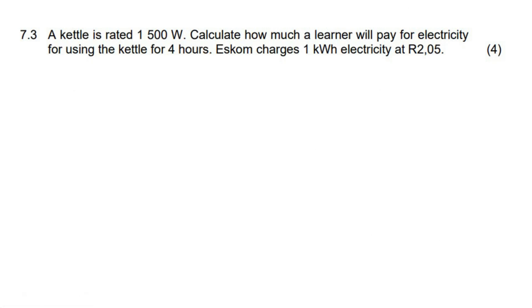A kettle is rated 1,500 watts — that's the power. Calculate how much a learner will pay for electricity if the learner uses the kettle for four hours and Eskom charges one kilowatt hour at R2.05.